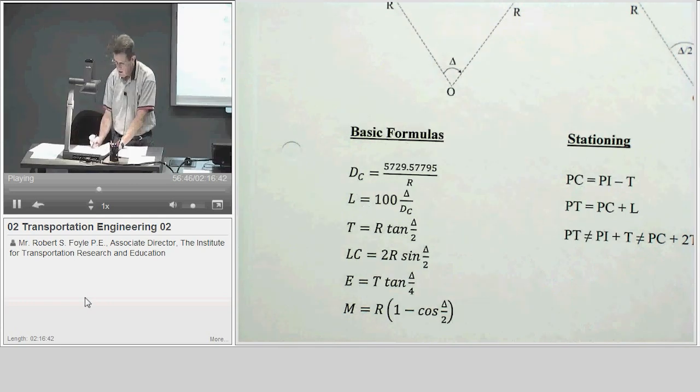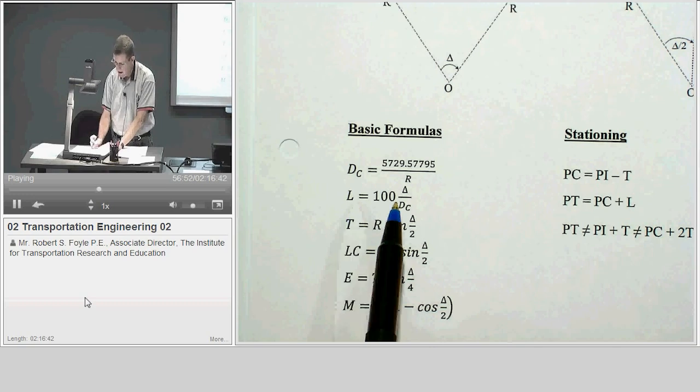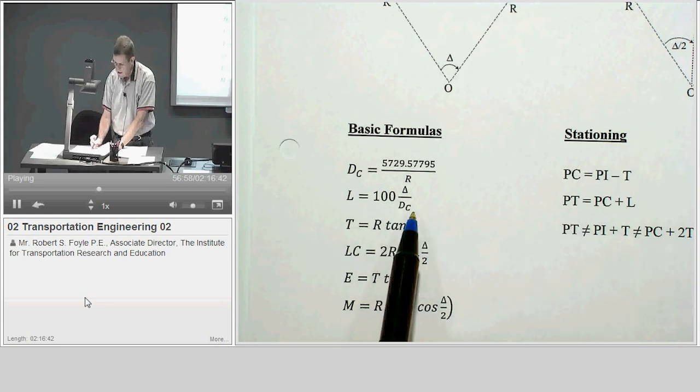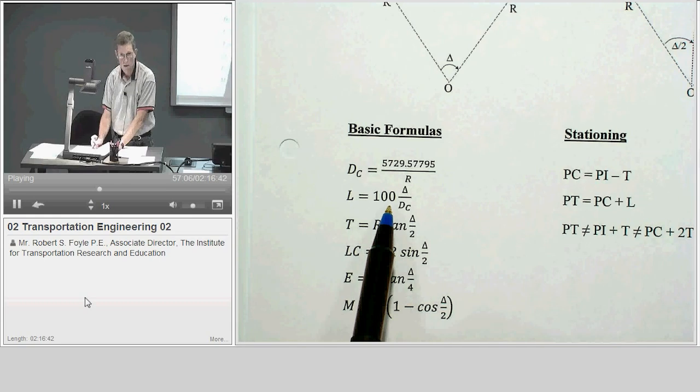I cannot use the degree of curve in any of my simple curve formulas. So let me go back a page. I want to make this really clear. Where I've got arc length of 100 feet, it's really 100 feet multiplied by delta divided by degree of circular curve. That D sub C, I cannot substitute in D sub R into this formula because this formula is based on the arc definition for highways and not railroads.